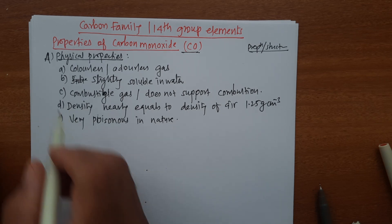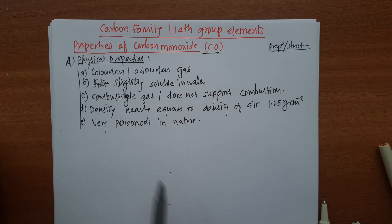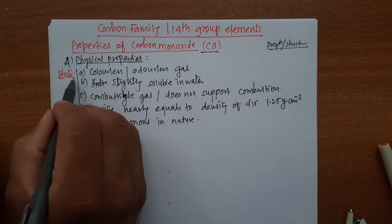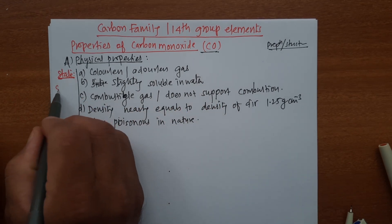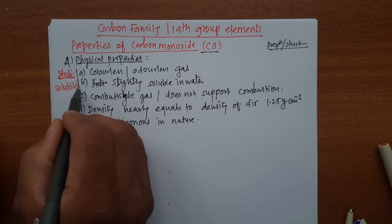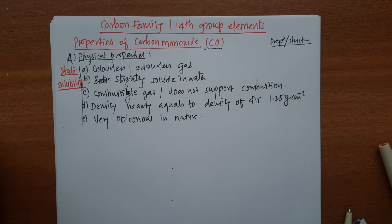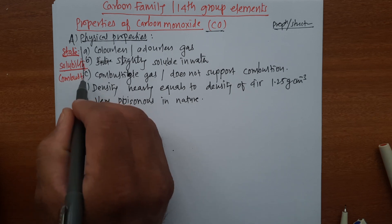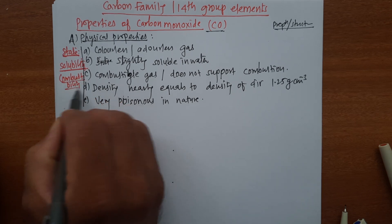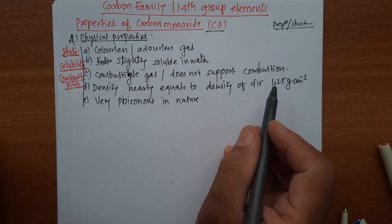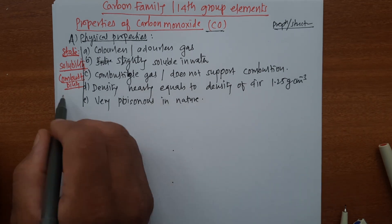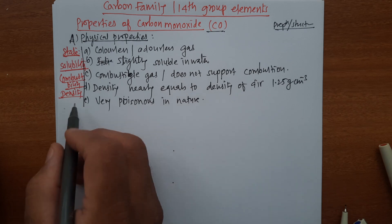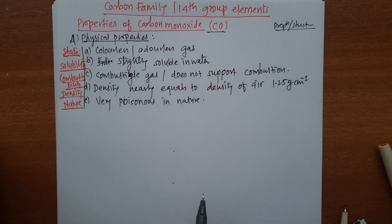So these are the physical properties. First property: it is a colorless, odorless gas. Next: solubility — it is partially soluble in water, not completely soluble. Then combustibility: it is a combustible gas but does not support combustion. Next: density, approximately equal to the density of air. And finally: nature — it is very poisonous in nature.